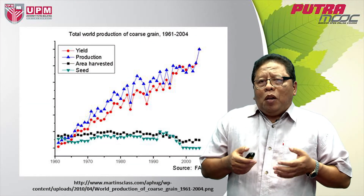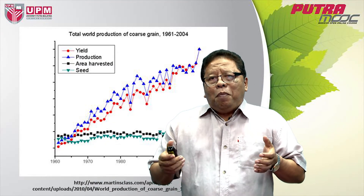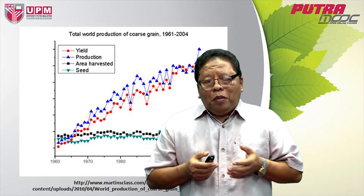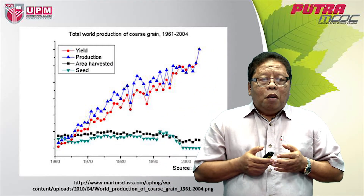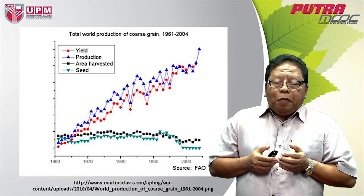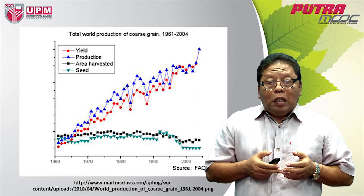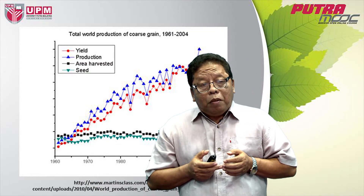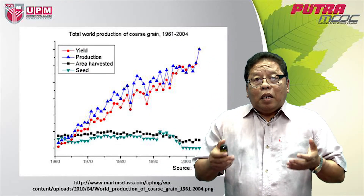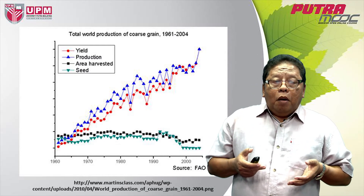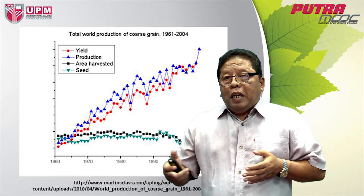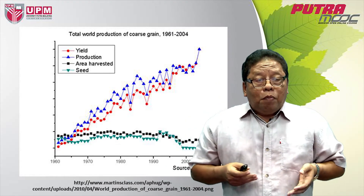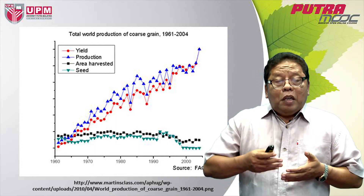So that means we have to do a lot in agriculture — we have to keep increasing our food production on a limited amount of land to support the growing population. This figure shows that if you look at the blue line, the production of food is increasing tremendously from 1960 to year 2000 onwards. But if you look at the area harvested — the area planted, which is the black line — there is no increase; it's a flat line, meaning no remarkable increase in agricultural land being planted.